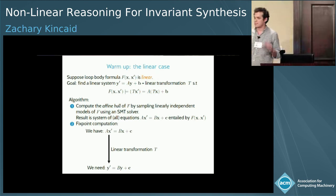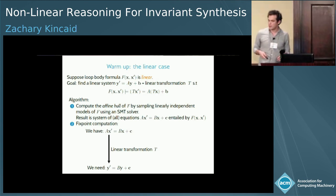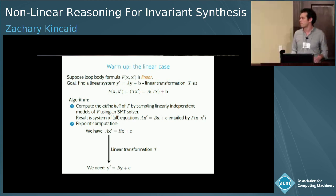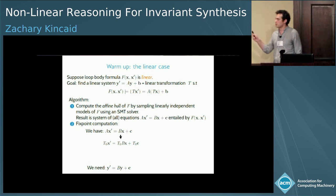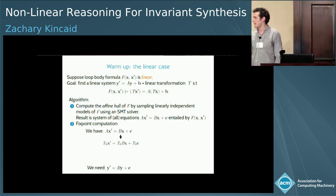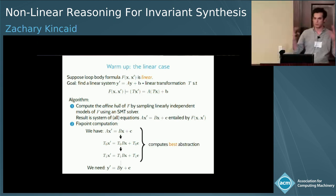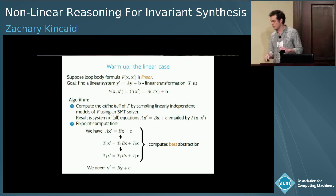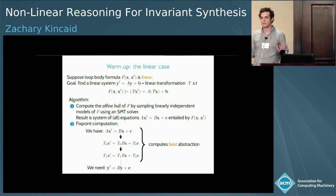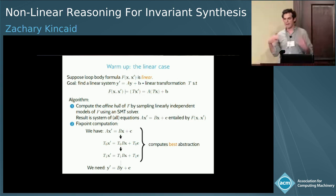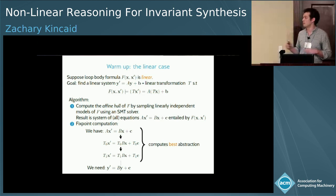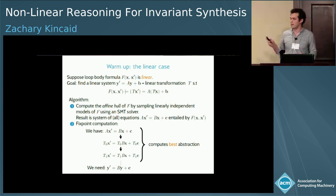We then need to go from this system of equations into a system of recurrence equations. This is done by an iterative fixed point computation, where at each step we apply a linear transformation that projects out equations that can't possibly contribute to a recurrence. We keep projecting out equations, reducing the dimension of the system at each step, until we converge on a fixed point. That fixed point will be the best system of recurrences — the maximal linear system that simulates the dynamics of the formula.